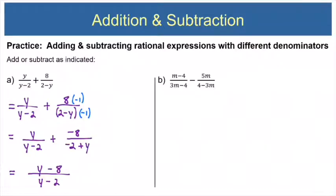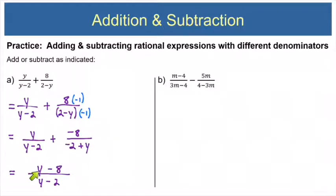Some of you may be tempted to cancel the y's or cancel 8 over 2 to get 4, but remember — you can't do that because these are not factors, these are terms. y is a term of the top and a term of the bottom, so they are not available for canceling.